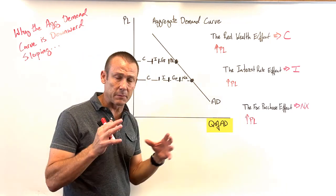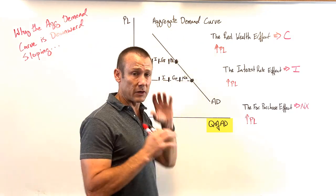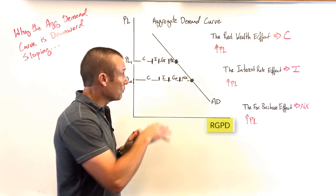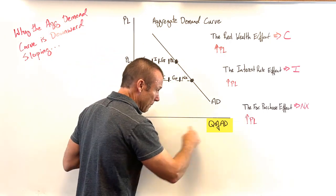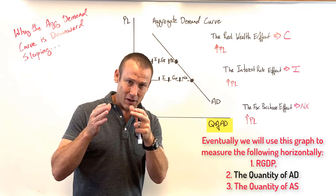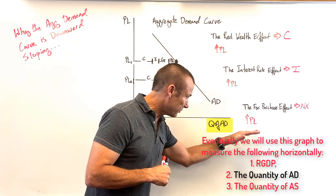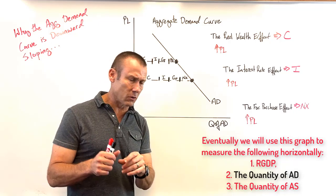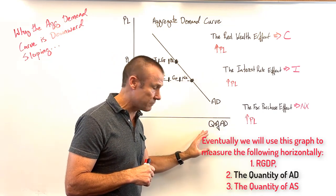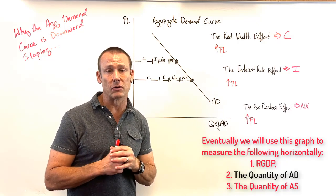Some of you might see 'quantity of AD' on the horizontal axis and wonder if that's supposed to be real GDP. Not yet — when I add the short-run aggregate supply (SRAS) and long-run aggregate supply (LRAS) curves I'll relabel it as real GDP, but with just the AD curve it's better to think of what we're measuring horizontally as the quantity of aggregate demand — the quantity of domestically produced goods and services demanded in our economy.